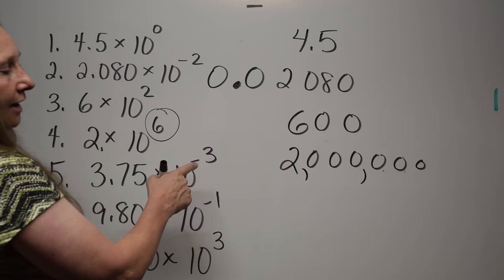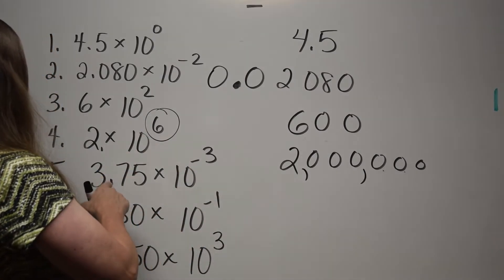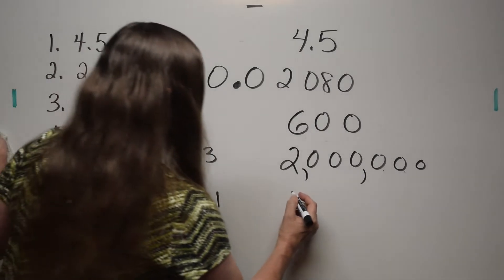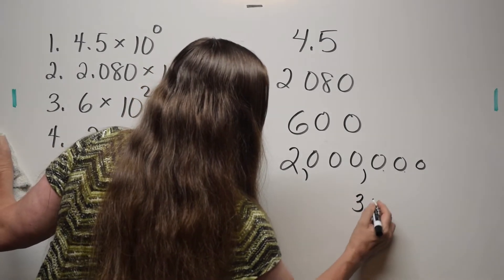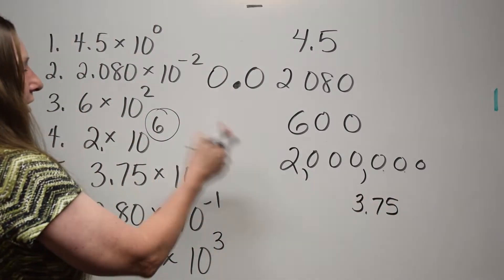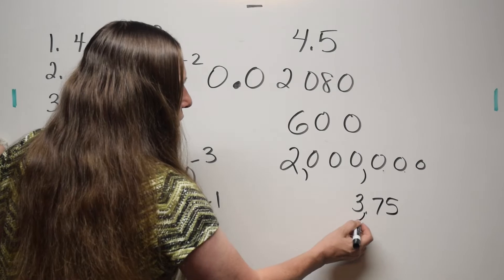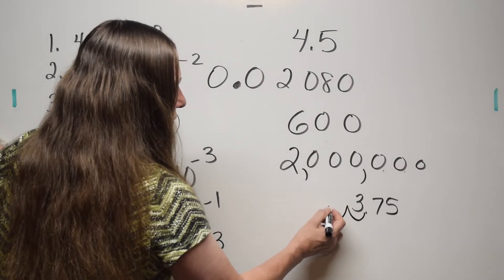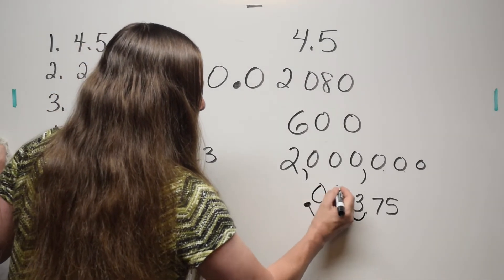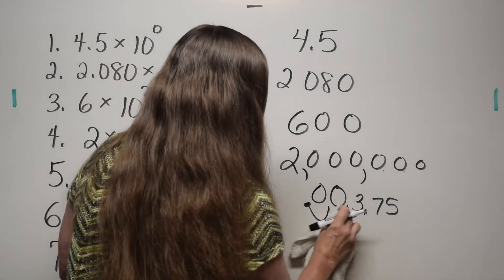Here, negative exponent — we're going to jump the decimal to the left. 3.75 — three jumps to the left from here: one, two, three. The number is 0.00375.